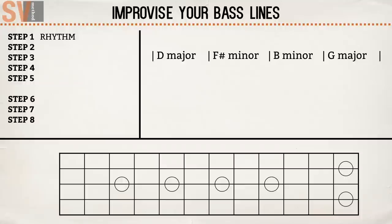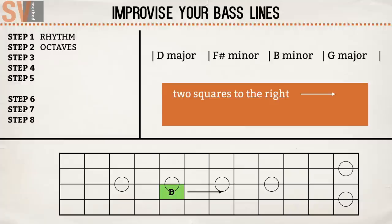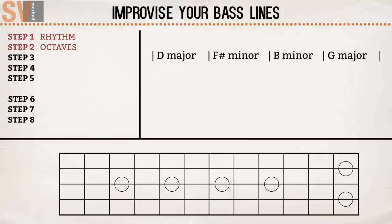The next thing you can use are octaves. Since this is the same note as the root note, you can always use it without clashing the melody or harmony. You can find the octave of any note on the bass guitar by sliding two squares to the right in the direction of the body and two strings upward. Now let's combine the first two steps using octaves in a rhythm.